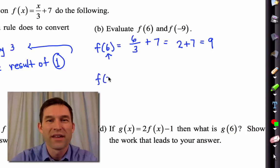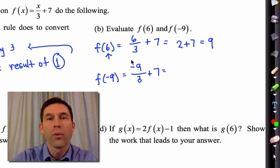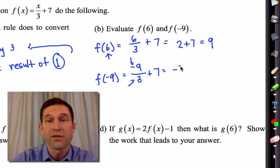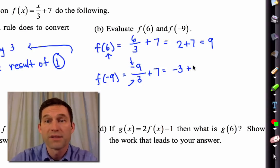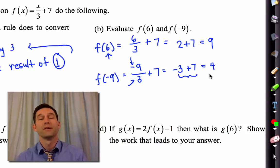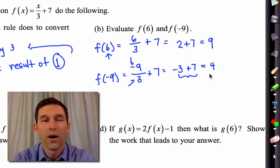Let's get a workout with negatives. Try to do as much as you can without the calculator. Take my input, divide by 3, add 7. When we take a negative divided by a positive, we always get a negative. 9 divided by 3 is 3, so negative 9 divided by 3 is negative 3. Negative 3 plus 7: 3 negatives cancel 3 positives, and we're left with an output of 4. So when input was 6, output was 9; when input was negative 9, output was 4.